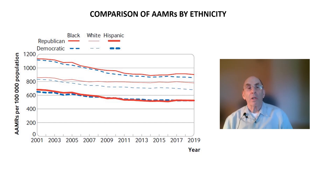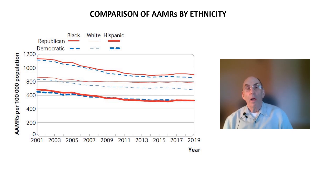In contrast, the results for White Americans, shown by the middle two lines, show striking differences between red counties and blue counties. Between 2001 and 2019, there was only a slight decline in mortality for White Americans living in red counties, while there was a significant decline in mortality for White Americans living in blue counties. The conclusion is that it is mostly White Americans who are driving the difference in age-adjusted mortality rates between red and blue counties.